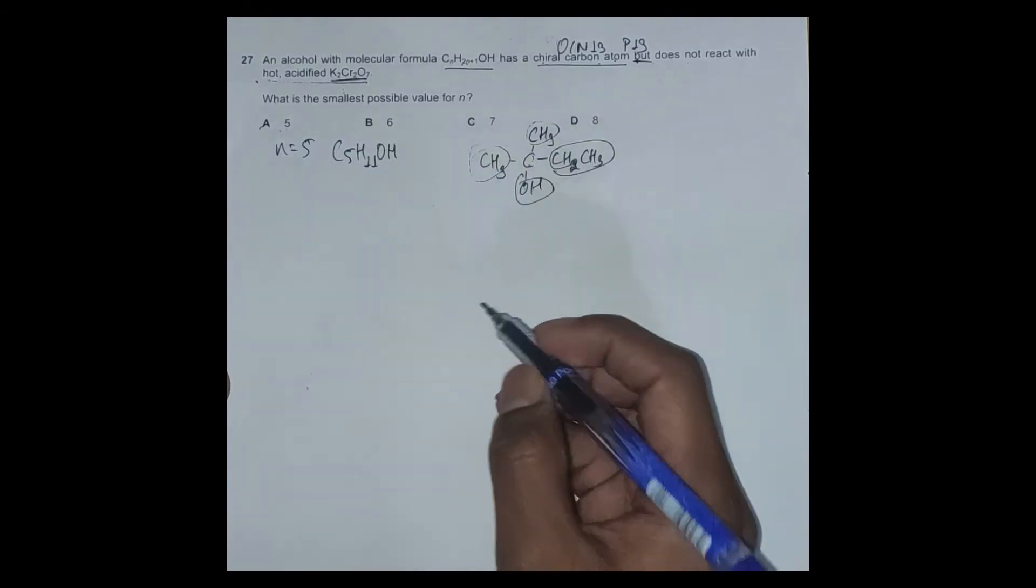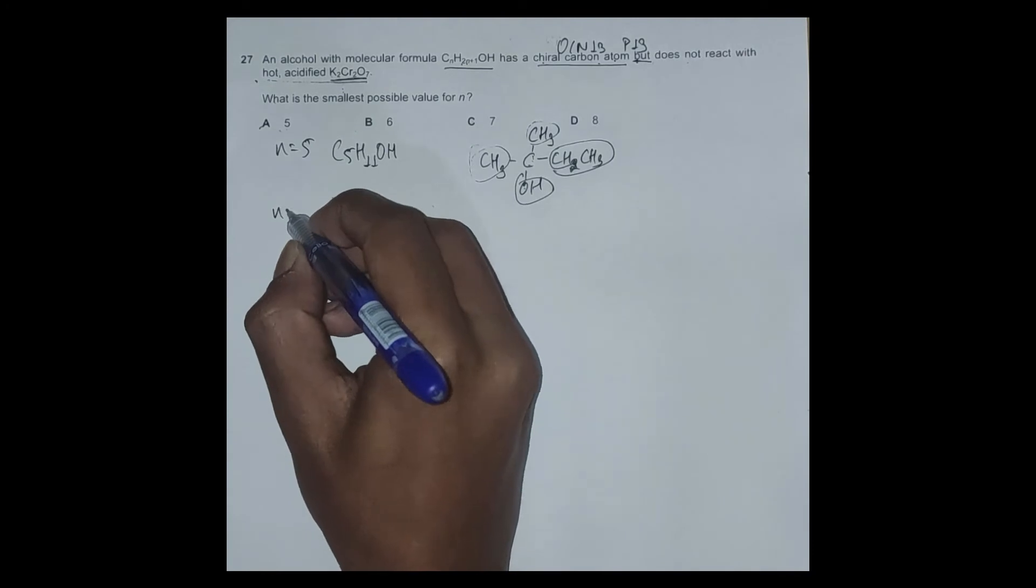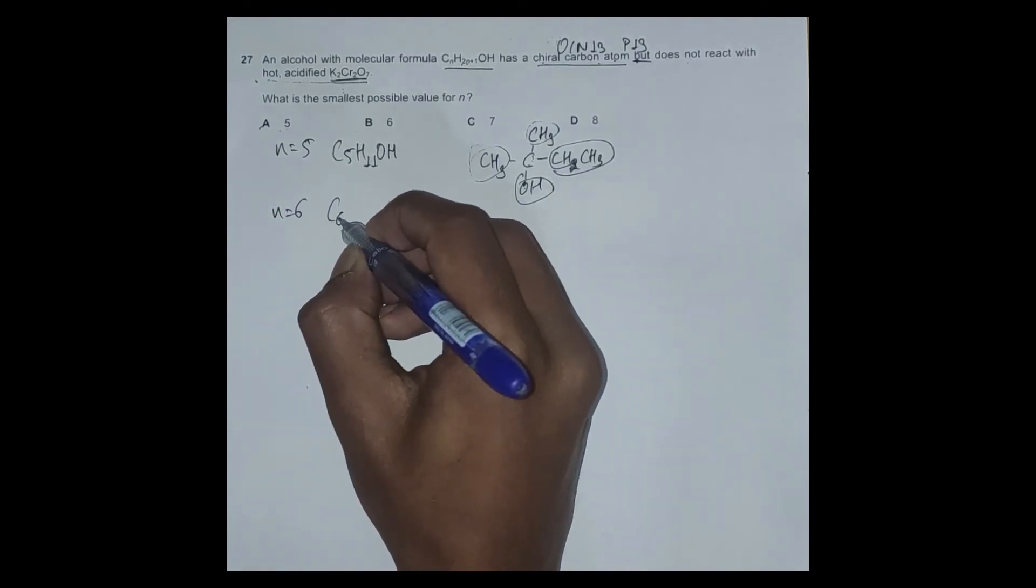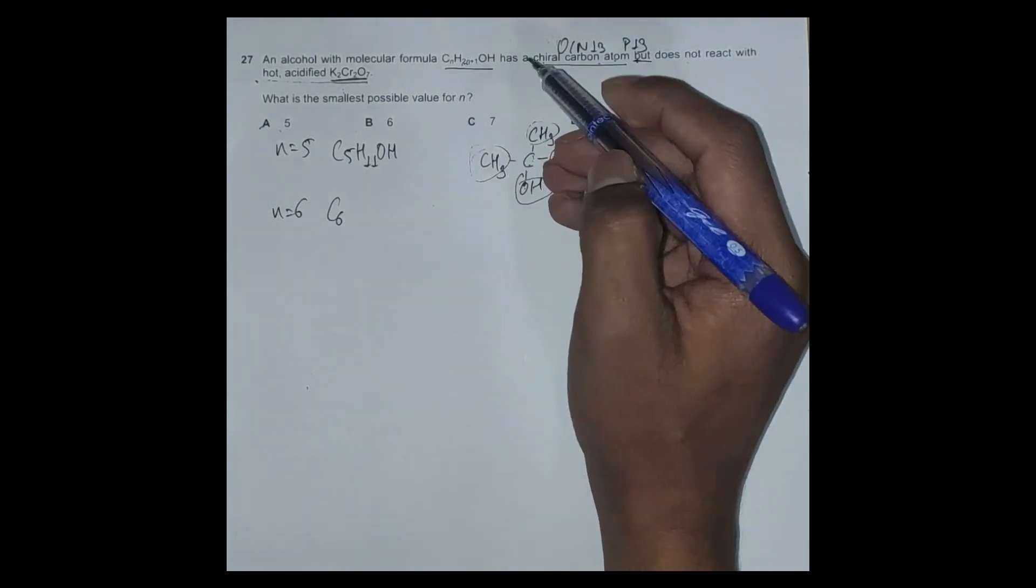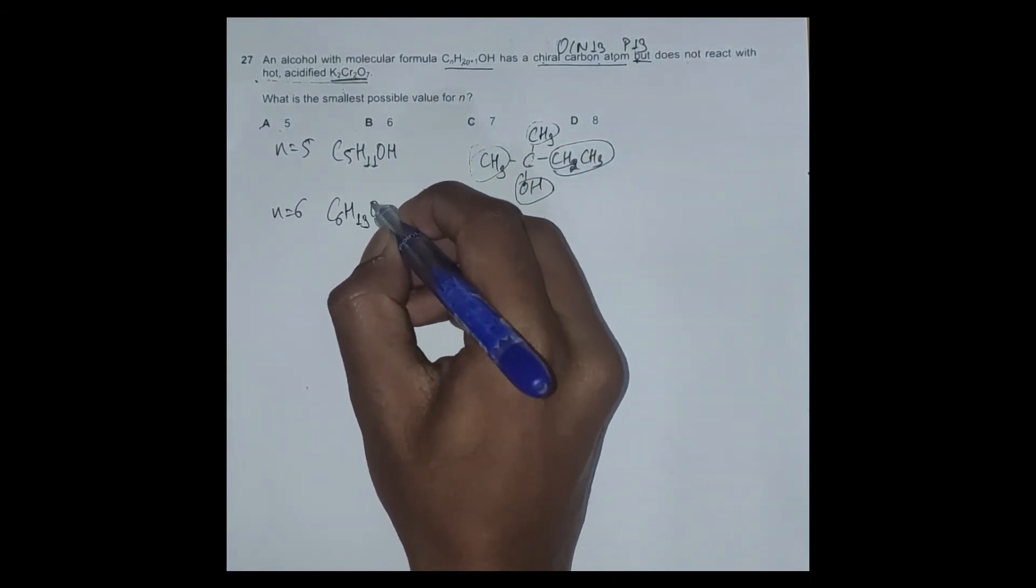Let's see if it's the same case or not for option B. When n equals 6, we have C6H13OH.